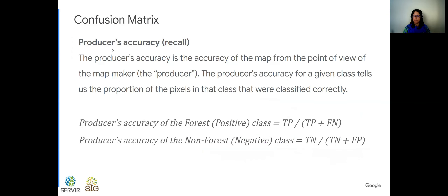Another metric is producer's accuracy, also known as recall. The producer's accuracy tells us the proportion of the pixels in a given class that were correctly classified — from all the pixels classified into that class, how many were correctly classified. For the positive or forest class, it's true positive divided by true positive plus false negative. For the negative or non-forest class, it's true negative divided by true negative plus false positive. With more classes, the terms change accordingly.